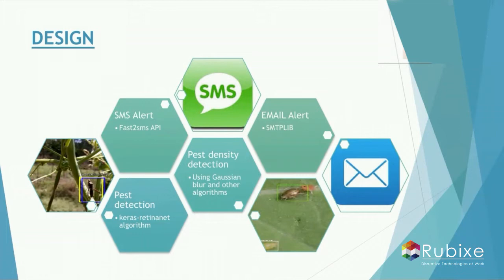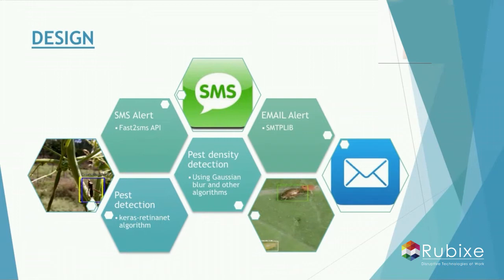For object detection, we have used Keras RetinaNet algorithm. We did our analysis on the top object detection models available. The two models selected for comparison were Keras RetinaNet and the Faster RCNN model. Based on speed, accuracy, and performance comparisons, we selected Keras RetinaNet as our object detection model.